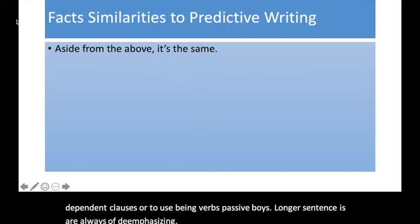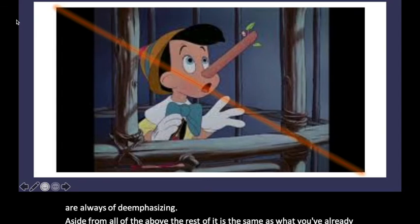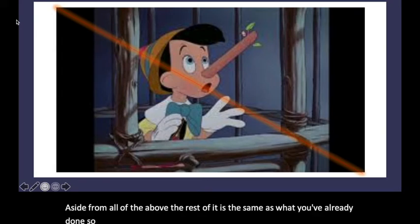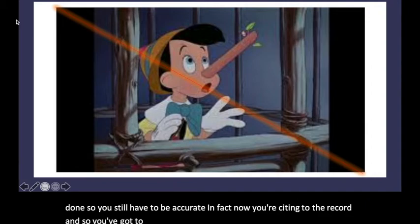Aside from all of the above, the rest of it is the same as what you've already done. So you still have to be accurate. In fact, now you're citing to the record. And so you've got to be very accurate with respect to what the record says.